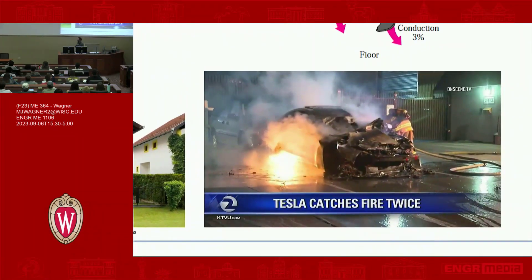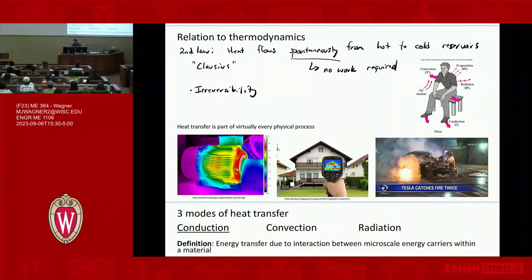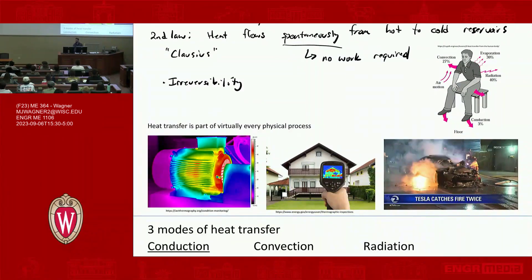Another example, bad thermal management, not to dump on Tesla. But if you're not careful about thermal management of a battery, for example, it can get out of hand. This particular Tesla caught fire twice. So just examples, I'm trying to ground you in why this stuff is important.